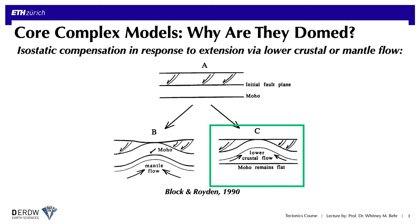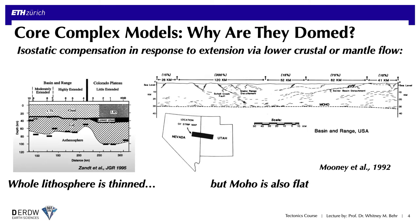Which of these models dominates is still somewhat debated. It seems like both have contributed, because on the one hand it's clear the whole lithosphere is thinned compared to the adjacent Colorado Plateau. But at the same time, seismic reflection data from parts of the Basin and Range also show that the moho is quite flat beneath some of the largest core complexes, like the Snake Range core complex. So both forms of isostatic compensation must have been important, but the ratio between the two is not very well understood.